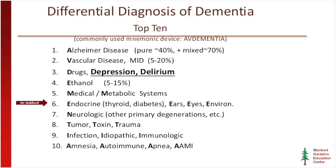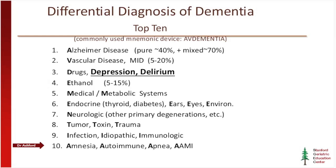Neurological problems can specifically cause different types of dementia — also tumors, toxins, and traumas. Infections and idiopathic or immunological problems round out the list. Finally, there are amnesia, autoimmune conditions, apnea, and age-associated memory impairment — all different issues to consider when evaluating dementia.